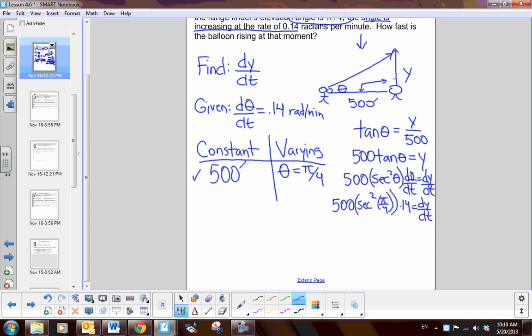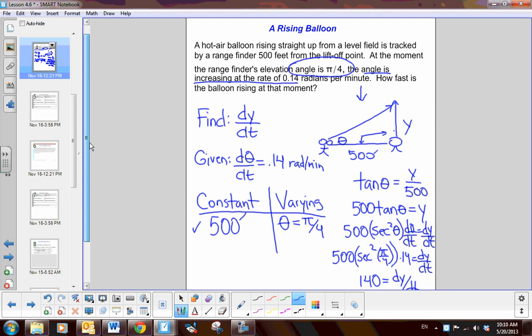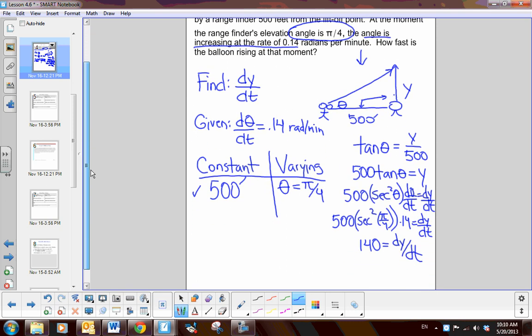So, now I just use my calculator and find a decimal approximation for this. And when I do that, I get 140 dy dt. Now, is that feet or what is the units here? So, it's feet. So, it's rising 140 feet per minute. So, the balloon is rising 140 feet per minute.